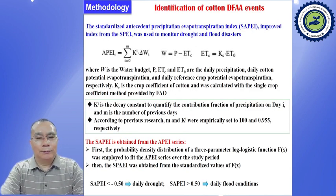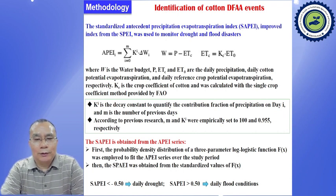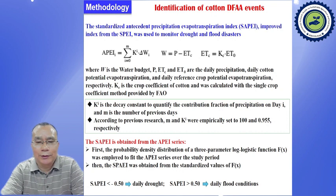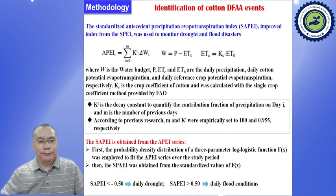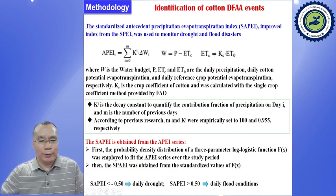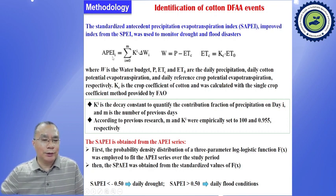Now, our methodology. First, identification of cotton DFAA events. We improve the traditional index SPEI to obtain the Standardized Antecedent Precipitation Evapotranspiration Index, SAPEI, as we can see from this formula. First, we calculate ETC — the daily cotton potential evapotranspiration. Then we calculate the water budget W. At last, we obtain APEI.